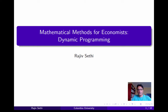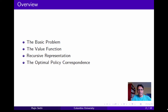In this segment, we'll start a detailed discussion of dynamic programming. We'll begin by defining the basic problem, which is an infinite horizon intertemporal optimization problem subject to constraints. We'll then define the value function, which is the supremum of the set of all attainable payoffs, and see how this value function can be represented in a recursive form. We'll also define the optimal policy correspondence, which will set the stage for the principle of optimality to be discussed in the next segment.